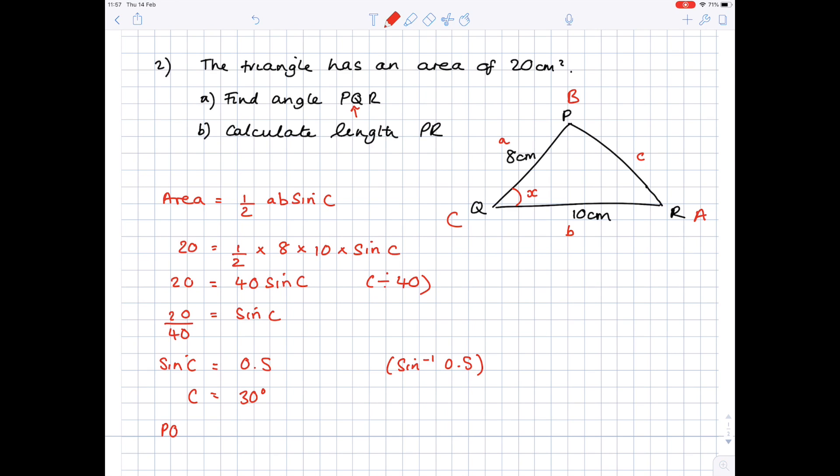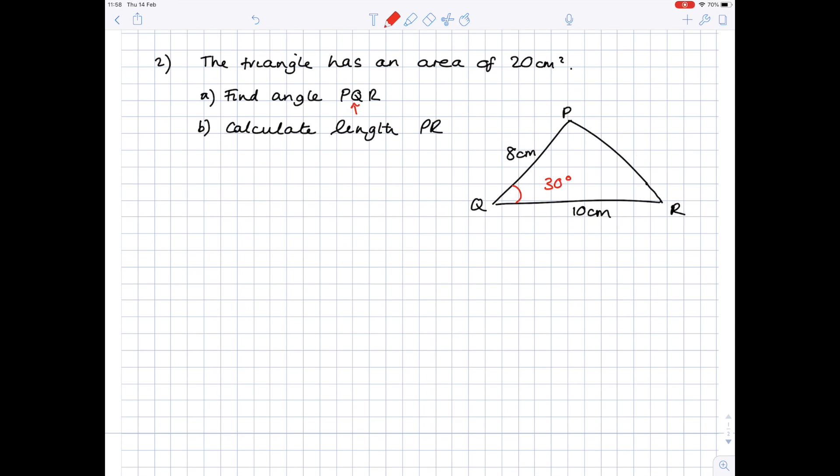And let's make sure we write it out. So PQR, which is effectively what we've just found, is 30 degrees. Let's pop that in because we now know that that is angle X or angle PQR. And now we need to do part B. So we're calculating PR.